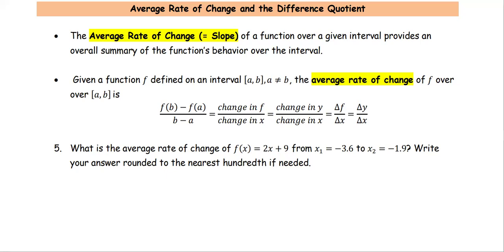A cannot be the same as B. The average rate of change of the function F over the closed interval AB is F(B) minus F(A) divided by B minus A, which is the same as the slope formula,